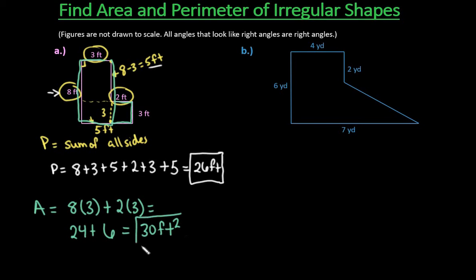So remember that since this is area, area is always in units squared. So we would end up with 30 square feet. Whenever you have two rectangles, you do want to make sure that you divide it, and like I said, you could have divided this a couple different ways.